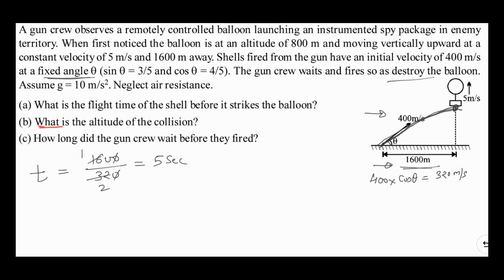In part 2 we need to find the altitude at which the collision is happening. The velocity of the shell in the vertical direction is 400 × sin θ, and since sin θ = 3/5, it works out to be 240 meters per second. The shell covers its vertical displacement in 5 seconds.